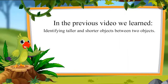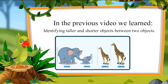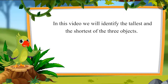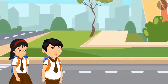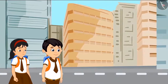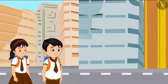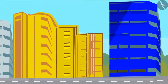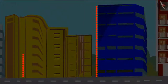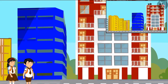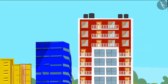Children, in the previous video, we learned to identify taller and shorter objects between two objects. In this video, we will identify the tallest and the shortest of three objects. Today, Pinky and Chotu are coming back from school together. Chotu, just see, these buildings are so tall. Look how tall this yellow building is. Yes, Chotu, look, this blue building is even taller than the yellow. Yes, Pinky, this blue building is taller than the yellow building. Hey, Chotu, just look, this glass building is taller than these two. Yes, Pinky, that glass house is the tallest among all these houses.